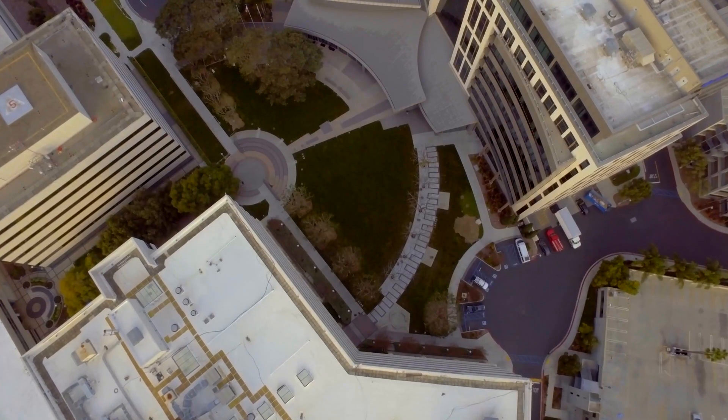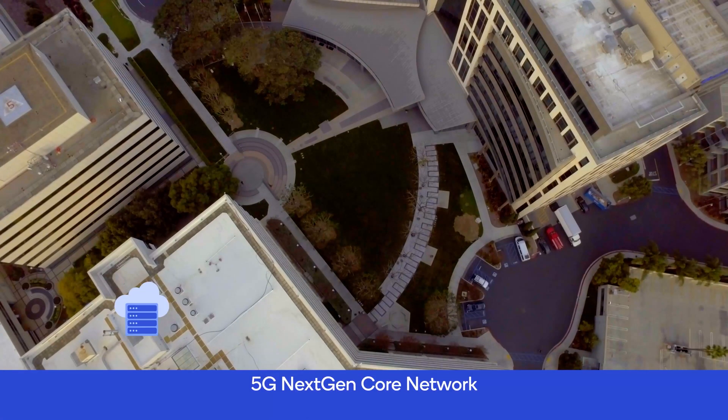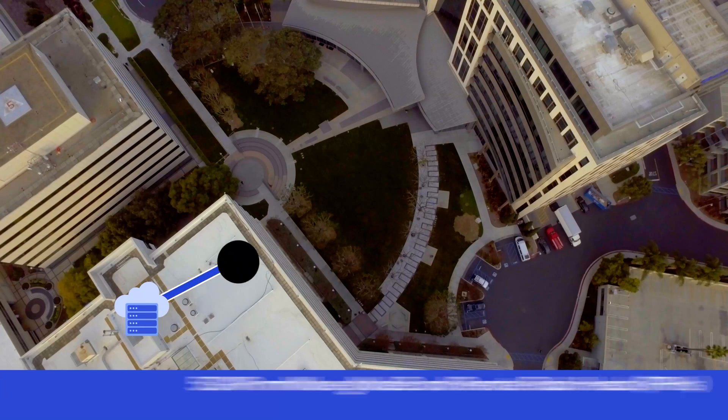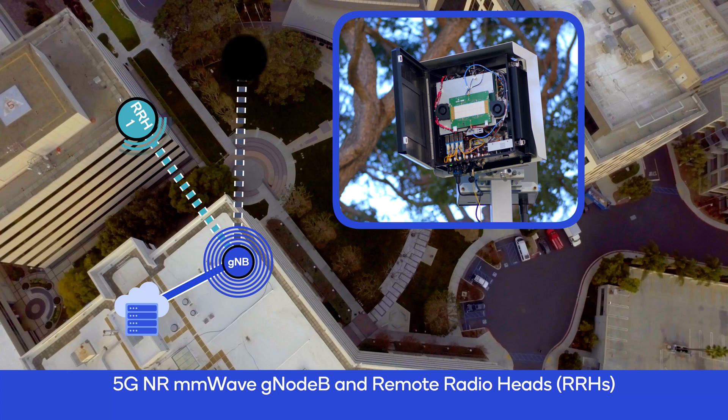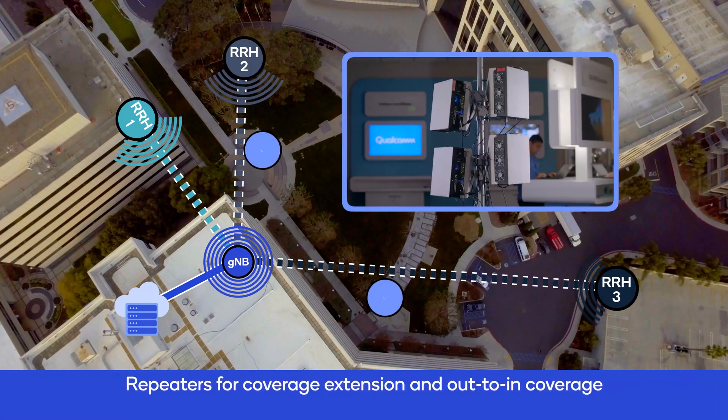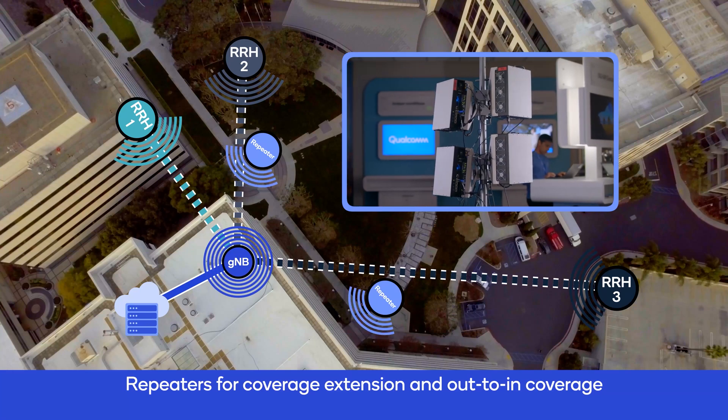This was a network we showcased last year at MWC19 but have since further enhanced to provide more robustness and coverage. It's a single cell deployment, a single gNodeB with multiple distributed remote radio heads that provide receive and transmit diversity as well as fast beam switching across the deployment space.